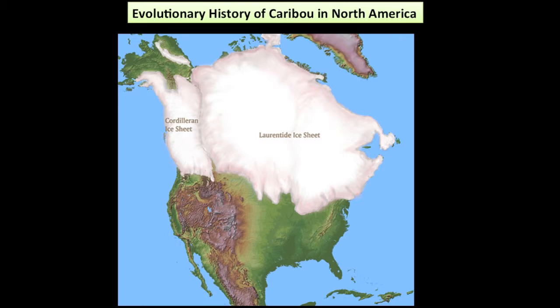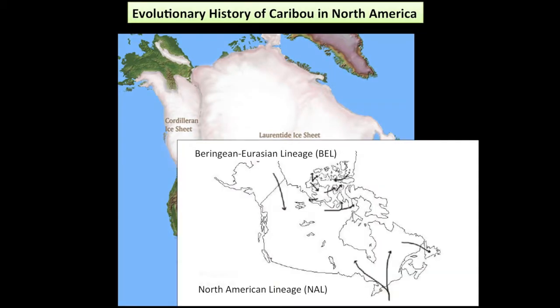One thing that was quite helpful was the phylogenetic history in some of these lineages — in particular two lineages that reflect the recolonization of caribou after the ice sheets passed. There are some challenges with that too, particularly where the two lineages met in the Southern Rocky Mountains and elsewhere. But this did give us quite a lot of information in terms of being able to classify these units in terms of their significance.